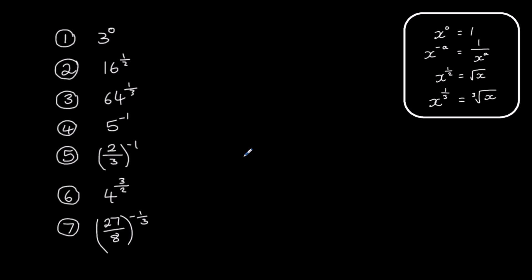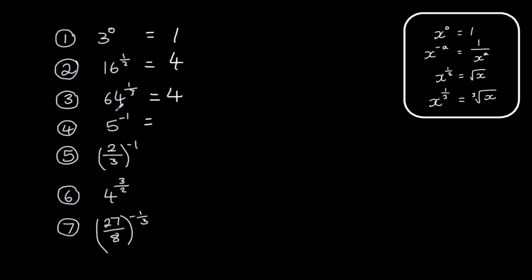Now I'll go through some questions. Firstly, three to the power of zero — anything to the power of zero is one, so this is one. Sixteen to the power of a half — the power of a half means square root, so the square root of sixteen is four. Sixty-four to the power of a third — the power of a third means cube root, and the cube root of sixty-four is also four. Five to the power of minus one — a power of minus one means flipped over, so that's one over five.